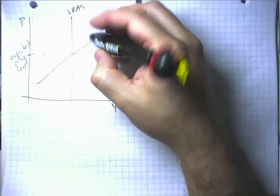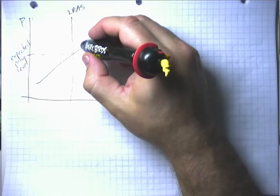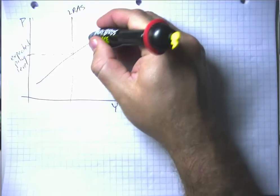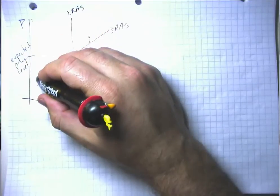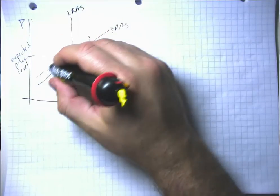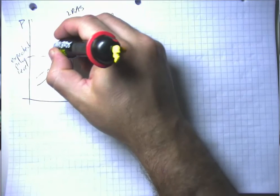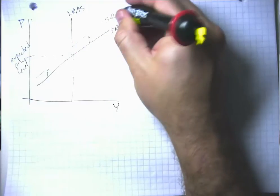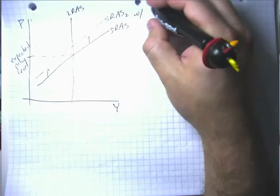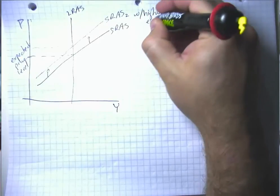And if firms come to expect higher prices over the course of the year, they'll start building some of those higher prices into their current prices so that they won't be sort of caught unawares. And we will have this intersection move up here. So short-run aggregate supply two with higher expected prices.